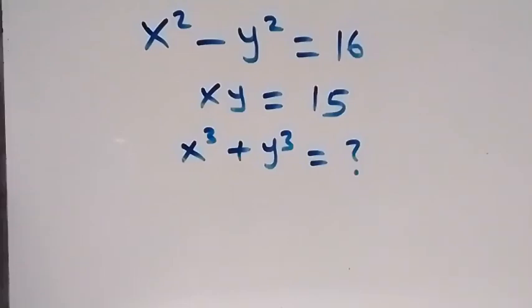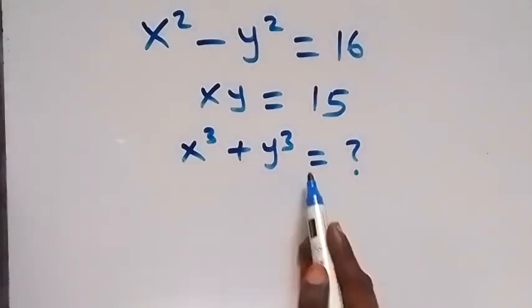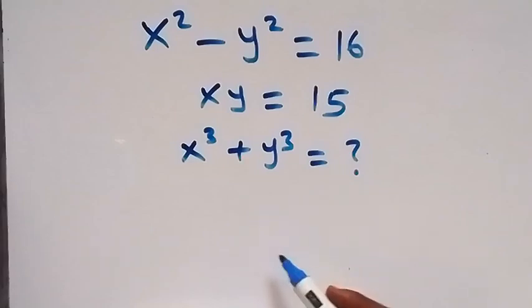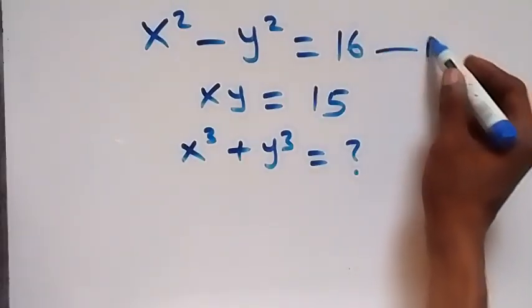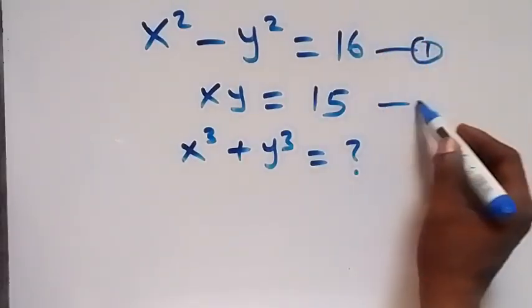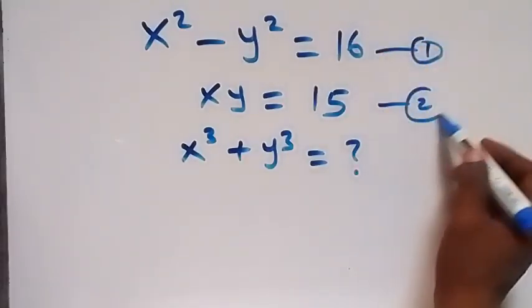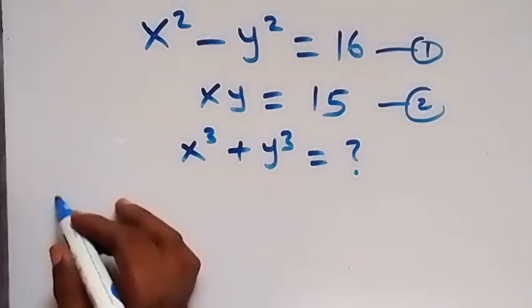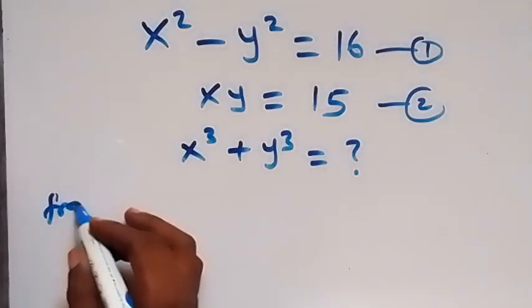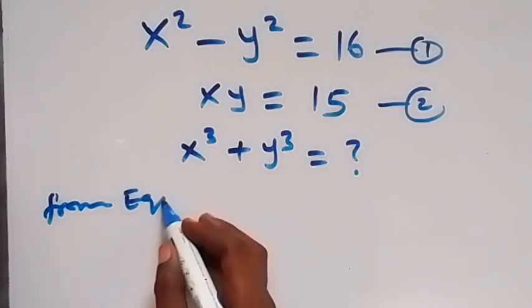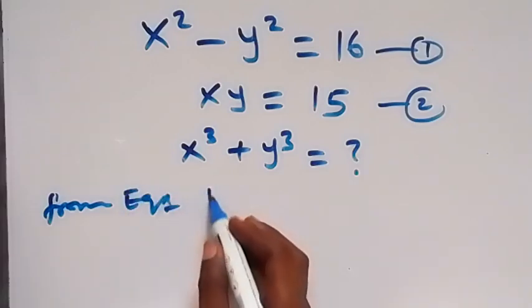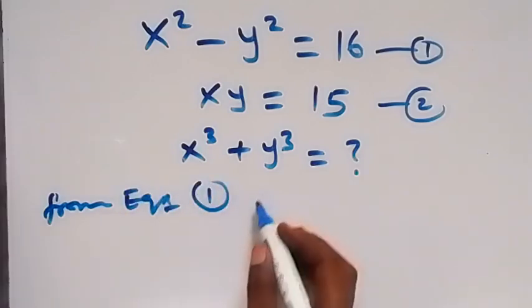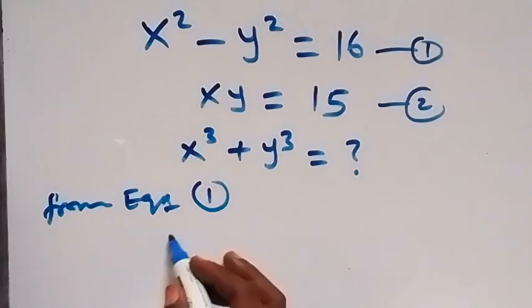Hello, you are welcome. We are going to solve this system of equations and find x cubed plus y cubed. Let's label this as equation 1 and this as equation 2. From equation 1, we have x squared minus y squared equals 16.